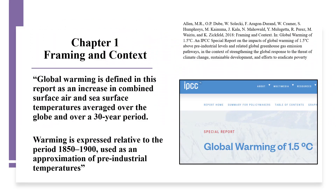This is the gold standard definition of global warming. It is defined as an increase in combined surface air and sea surface temperature averaged over the globe and over a 30-year period. Warming is expressed relative to the period 1850 to 1900, which is used as an approximation of pre-industrial temperatures.